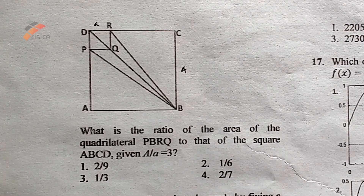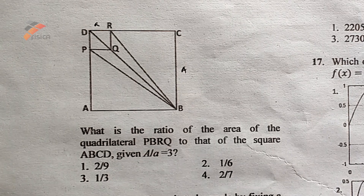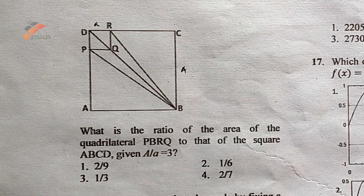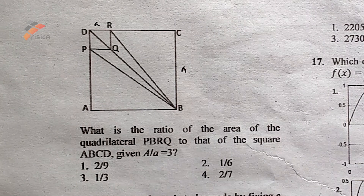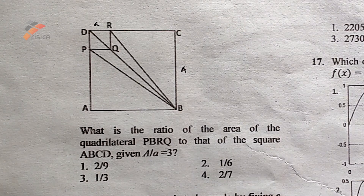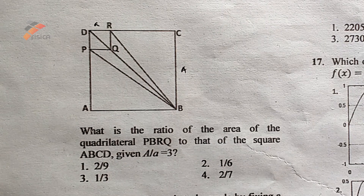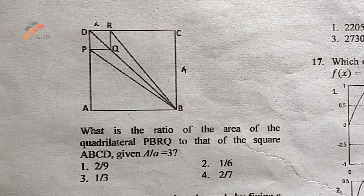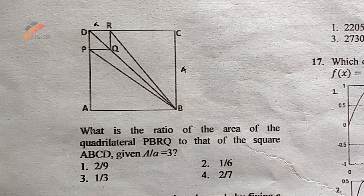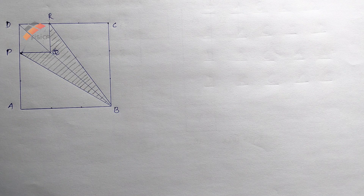BRQP is a small square of side small a in the corner of a big square ABCD of side capital A. The question is: what is the ratio of the area of the quadrilateral PBRQ to that of the square ABCD, given capital A divided by small a equal to 3? The options are 2/9, 1/6, 1/3, and 2/7.